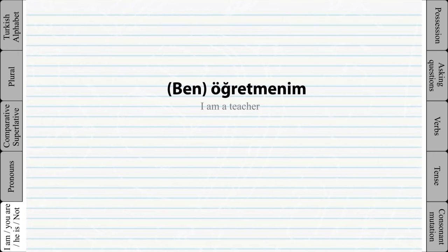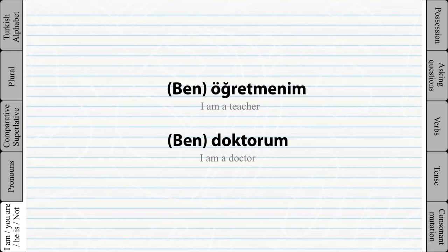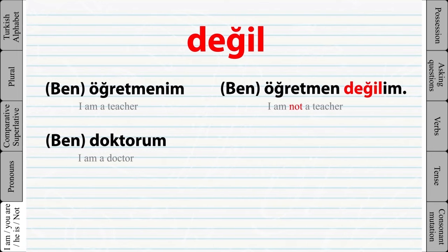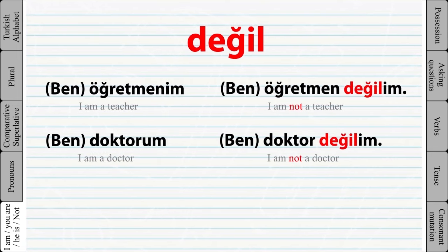We learned how to say 'I am a student' and 'I am a doctor'. Now to say 'I am not a student' or 'I am not a doctor', we simply add the word 'değil' between the word and the personal ending. Because the last vowel of 'değil' is 'e', all suffixes added after it will always be in the same vowel group.